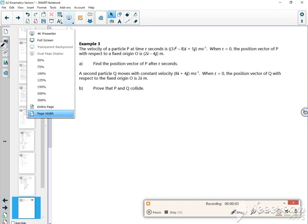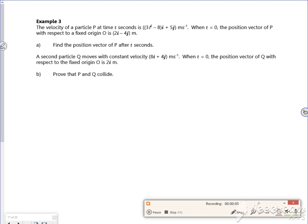Right then, are we ready then? So this is example 3 of the third lesson, the last one. The velocity of a particle at time t is 3t squared minus 8 in the i-direction, and 5 in the j-direction. When t is 0, the position vector with respect to a fixed origin, so r0 is 2 minus 4.